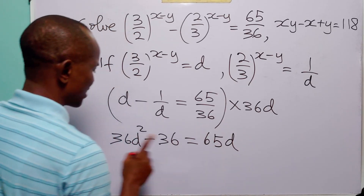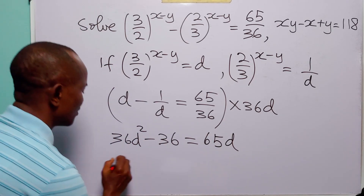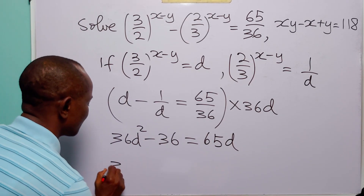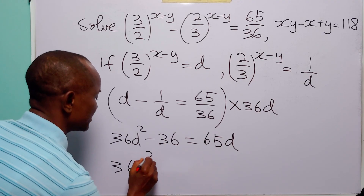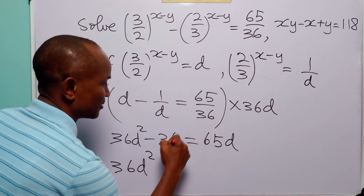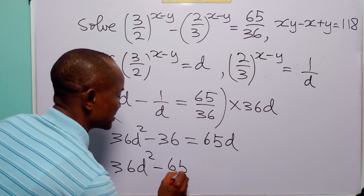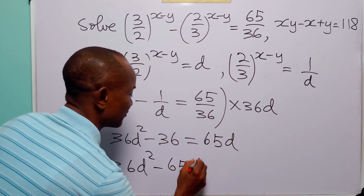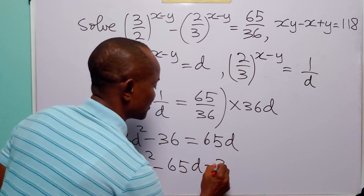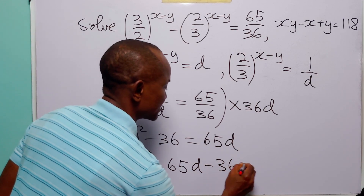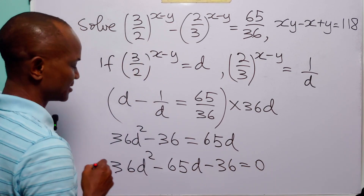Now let us rearrange this quadratic equation. We have 36d squared minus 65d minus 36 is equal to 0.